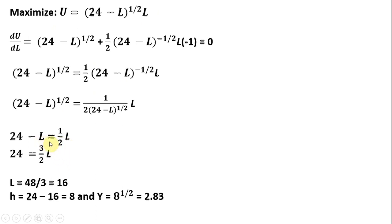And then adding L to both sides, we get 3 halves L equal 24. Solving for L, we get 16. And if Robinson is taking 16 hours of leisure in a day and there's 24 hours in a day, that means he must be working the remaining hours or 8 hours. Plugging 8 hours of work into the production function, Robinson produces 2.83 units of good Y.